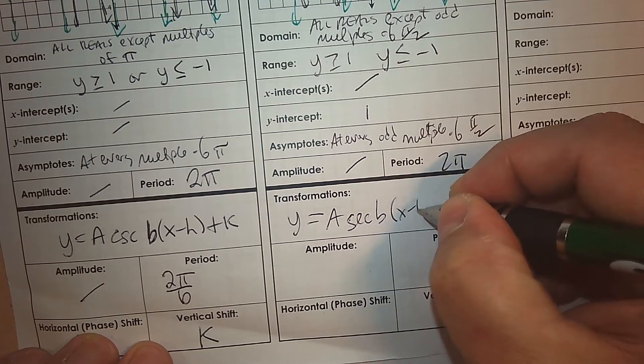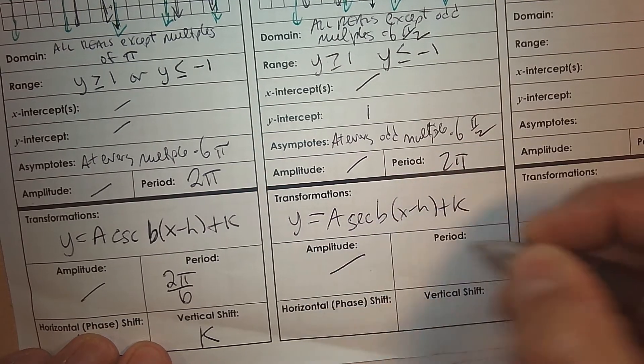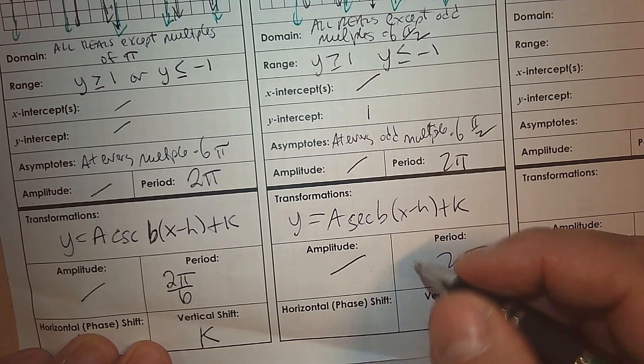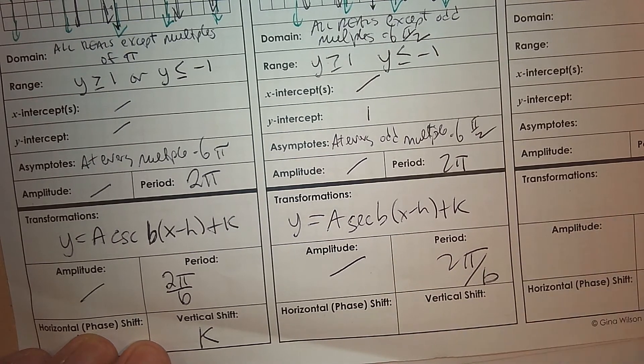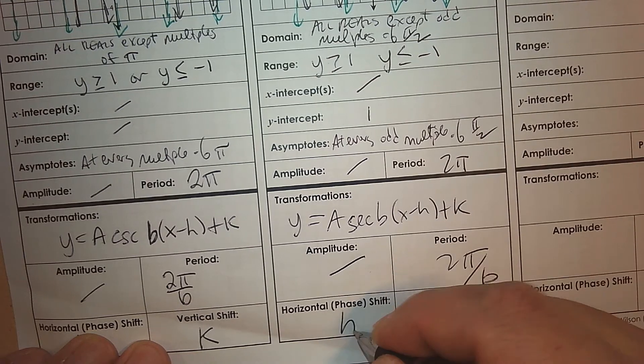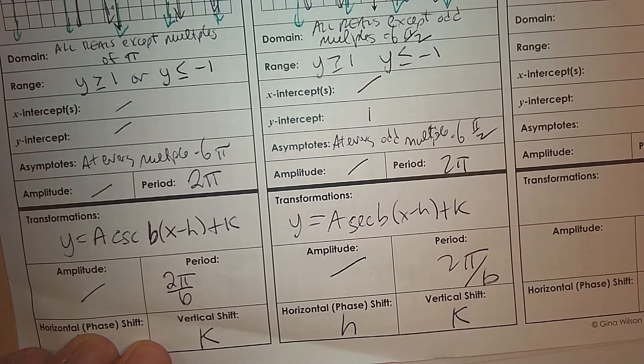If we had a transformation, it's going to be exactly what we just said for cosecant. We just start at different spots. So there's no amplitude. It's 2 pi. And then you would divide by b. H is the horizontal or phase shift, and k is the vertical shift.